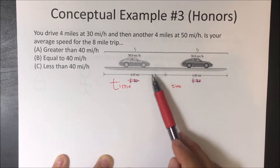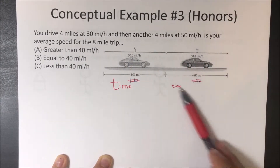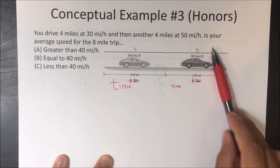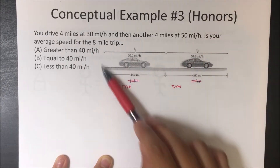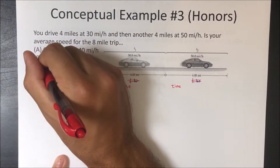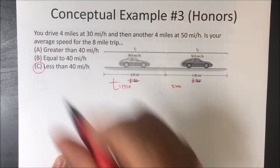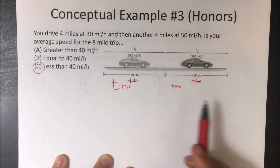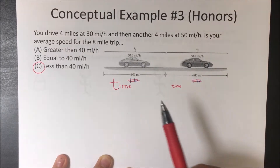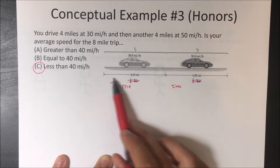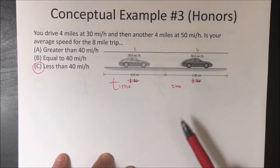Since the car is going for longer at 30 miles an hour than at 50 miles an hour, the average miles per hour is going to be less than 40 miles per hour. You can verify this mathematically by finding the actual times, then dividing total distance by total time.